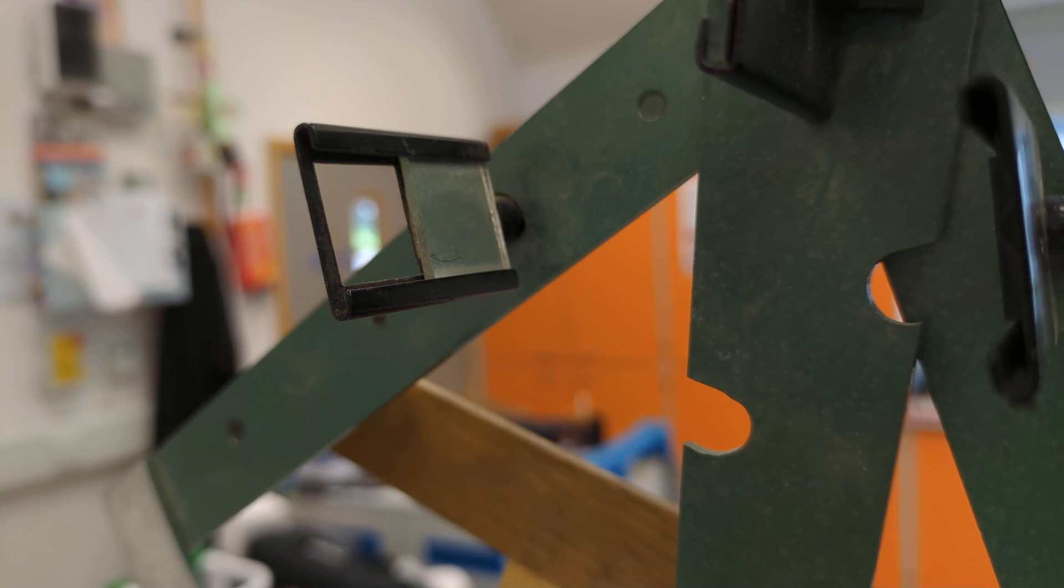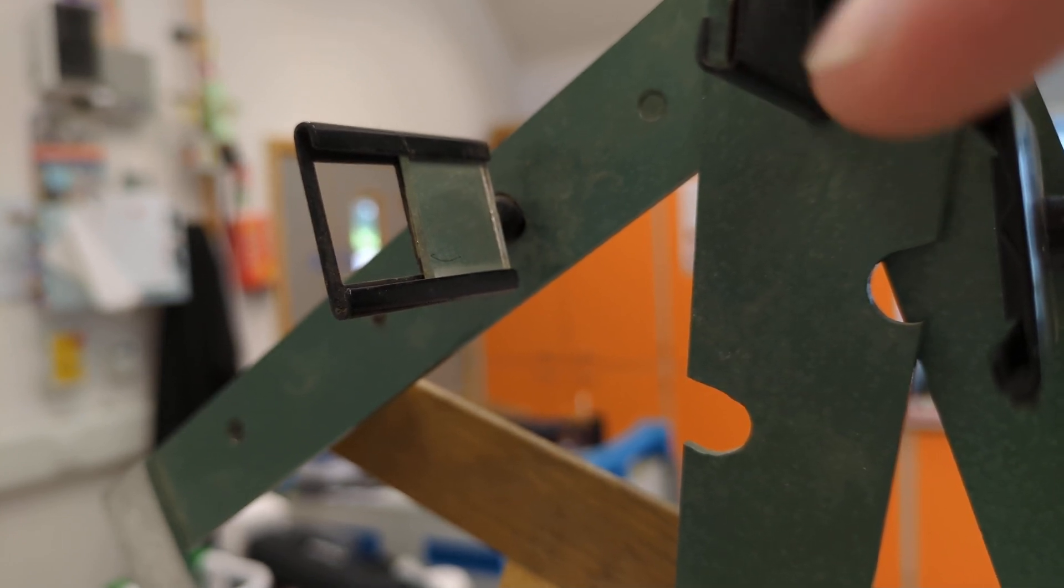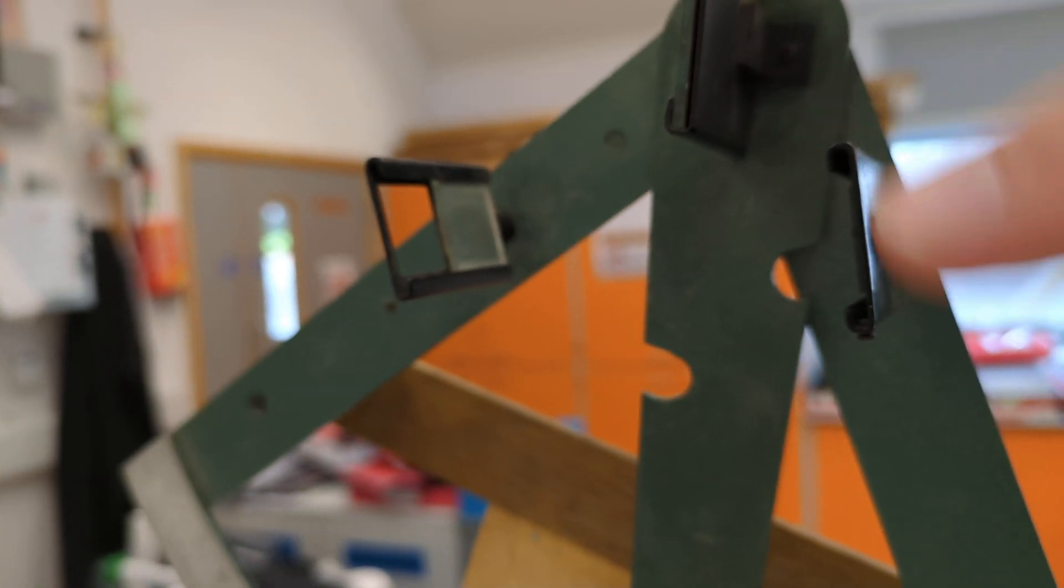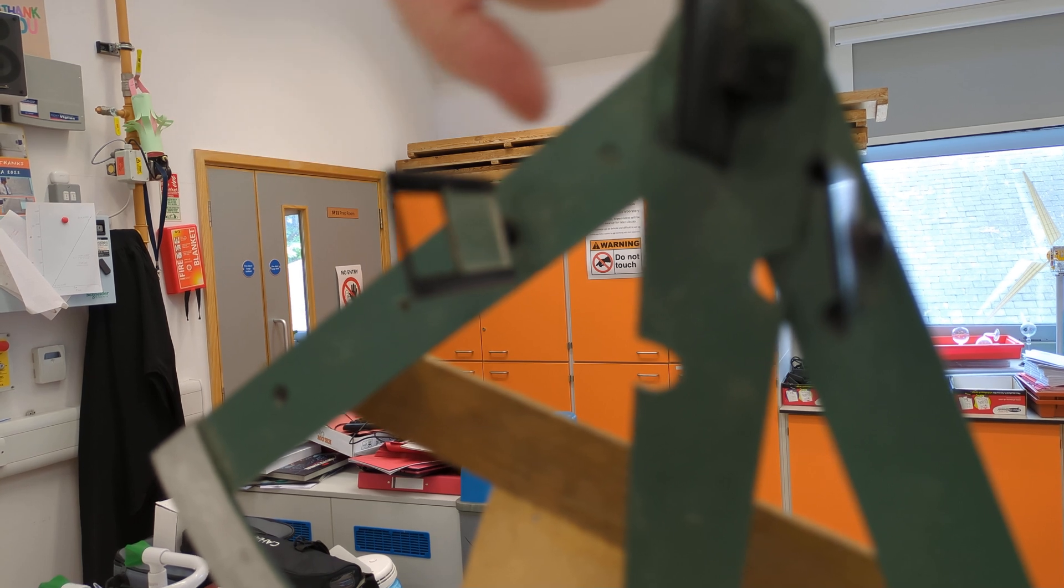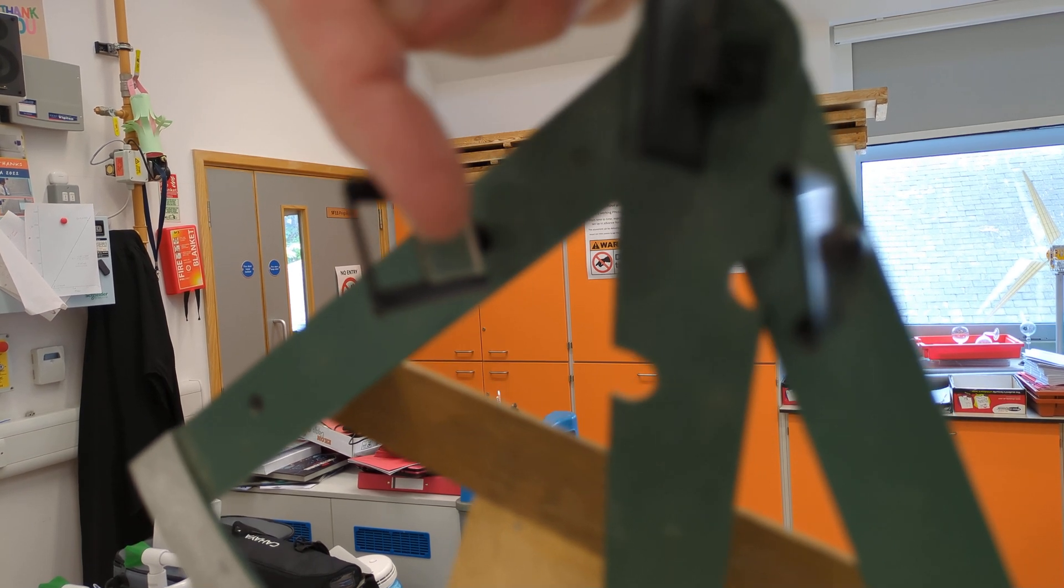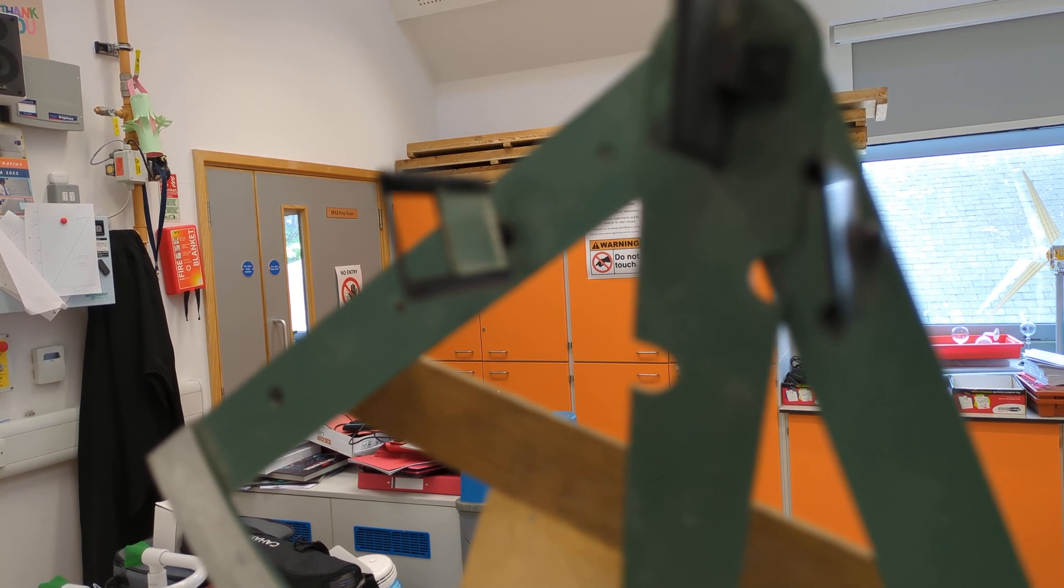So what is that principle of operation? We're going to look through the hole, which is here. Light from the horizon is going to come in, reflect off this top mirror, reflect off here, and then go through that hole and we're going to see it.